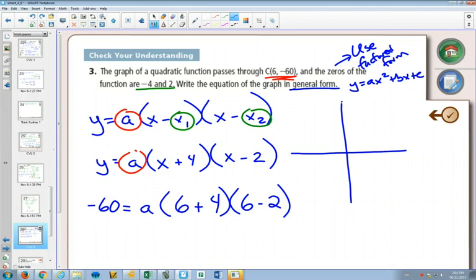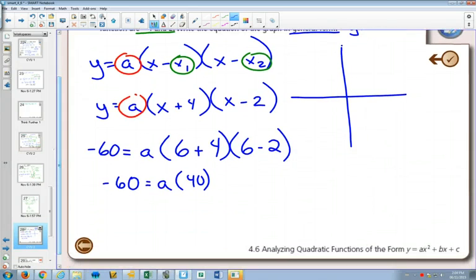And here we'll have -60 equals a times 10 times 4, which will be 40. Divide both sides by 40. 60 over 40 simplifies to 3 over 2. And now we have our a value.